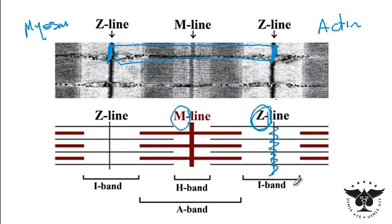Now there are other structures you will have to be familiar with, called the I band, H band, and A band. The I band is the zone of thin filaments, or actin filaments, that are not superimposed by the thick filaments.